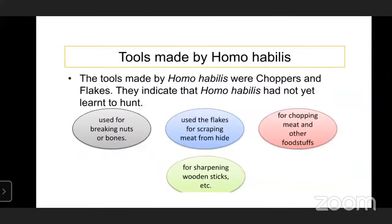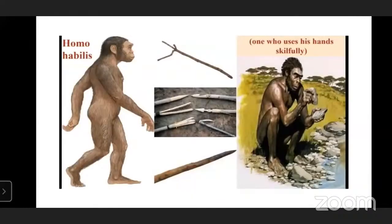Homo Habilis and Homo Erectus sharpened one side and made their tools using the percussion technique. Observe this picture - here are tools made by Homo Habilis: choppers and flakes. These indicate that Homo Habilis had not yet learned to hunt. They used choppers for breaking nuts, flakes for scraping meat from hide, chopping meat and other food items, and sharpening wood sticks.